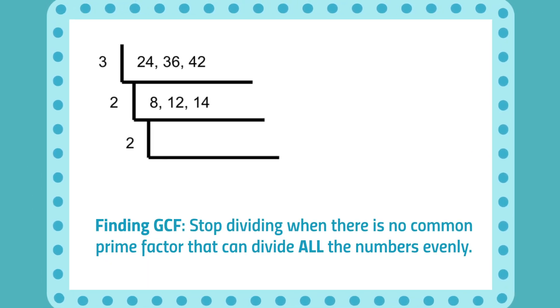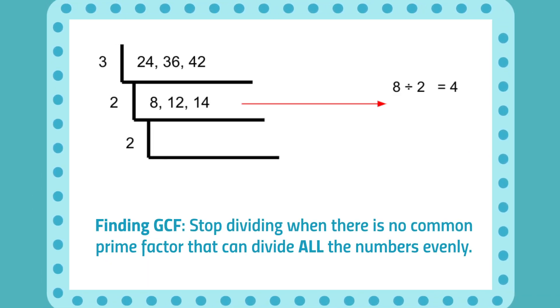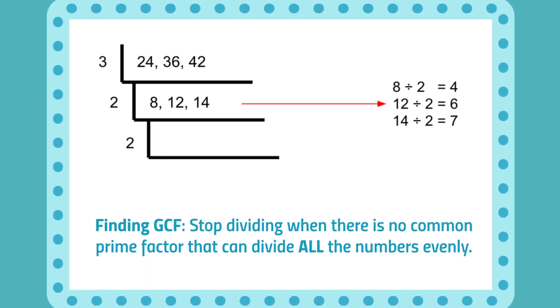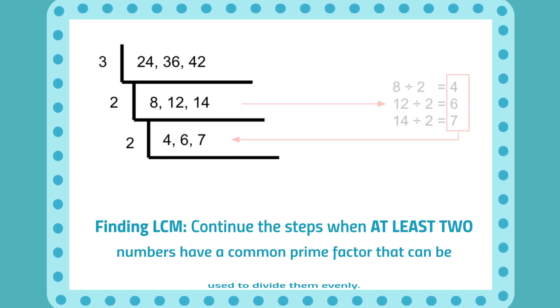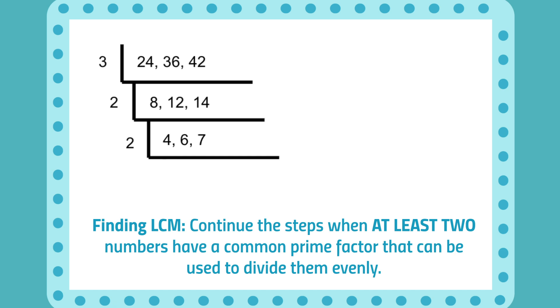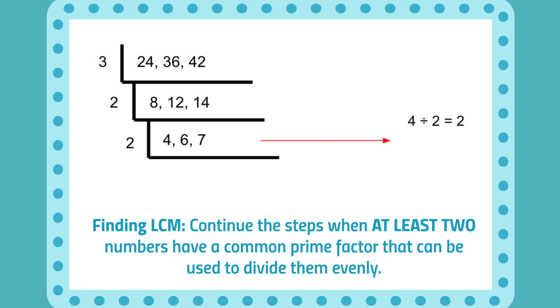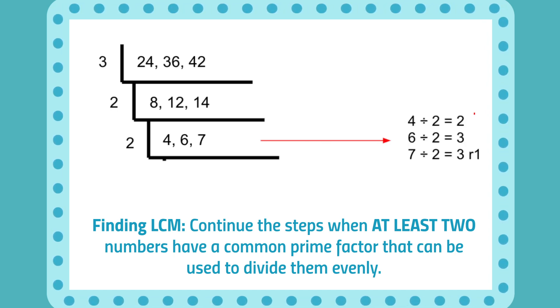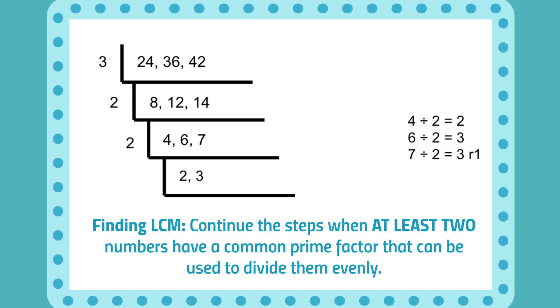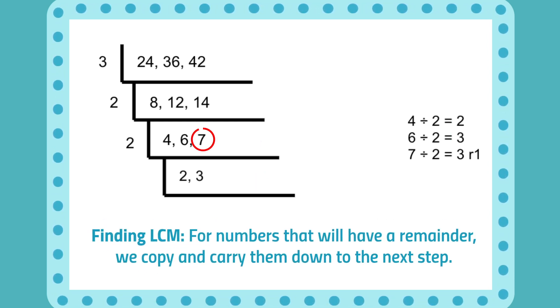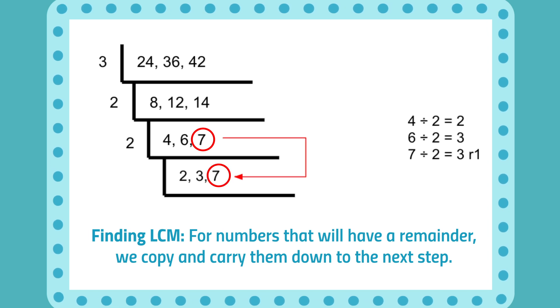When finding the GCF, we stop when there is no common prime number that can divide all numbers in each step evenly. However, for the LCM, we continue dividing if at least two numbers in each step can be divided evenly. For the numbers that have a remainder, we carry them down to the next step.